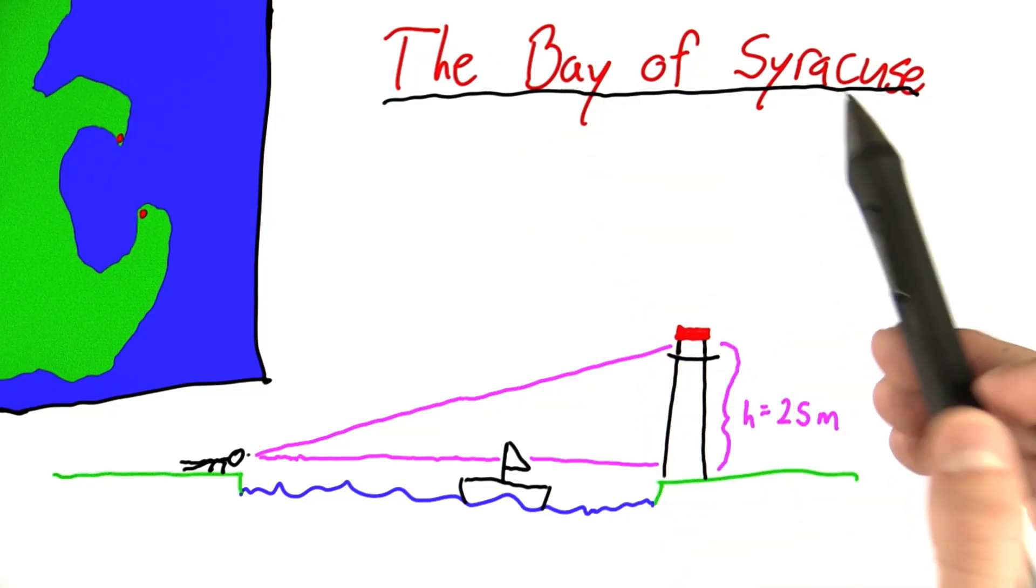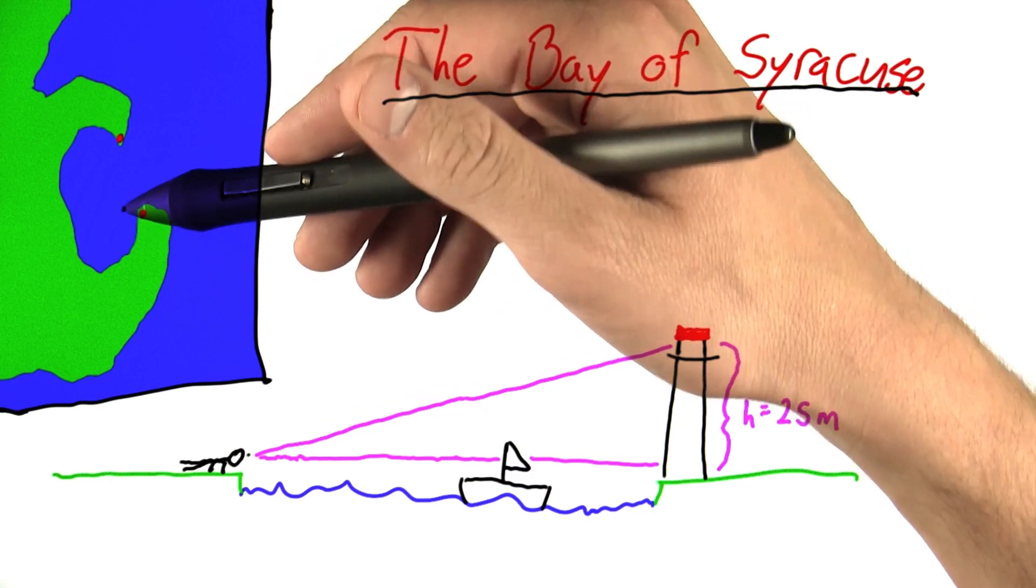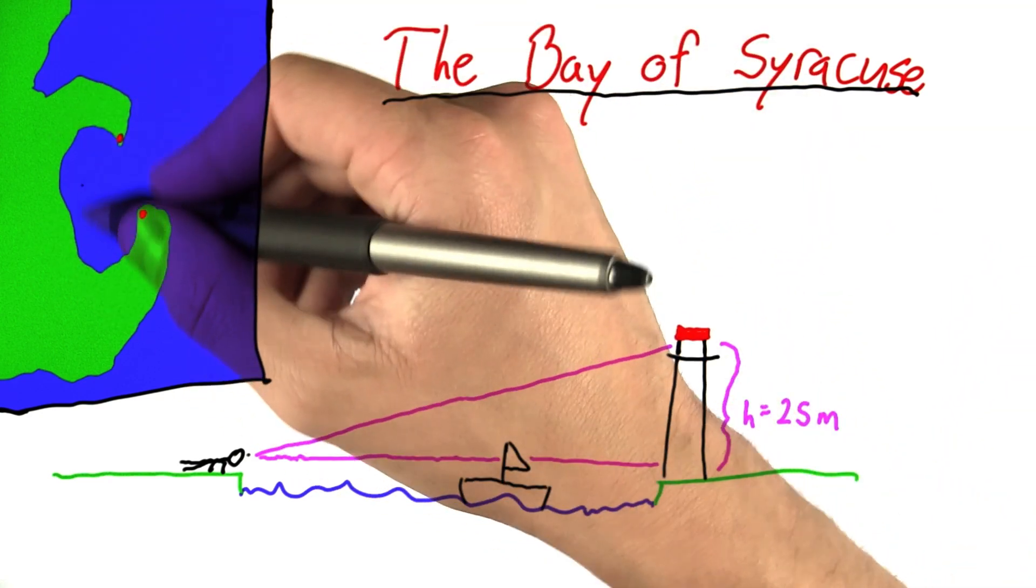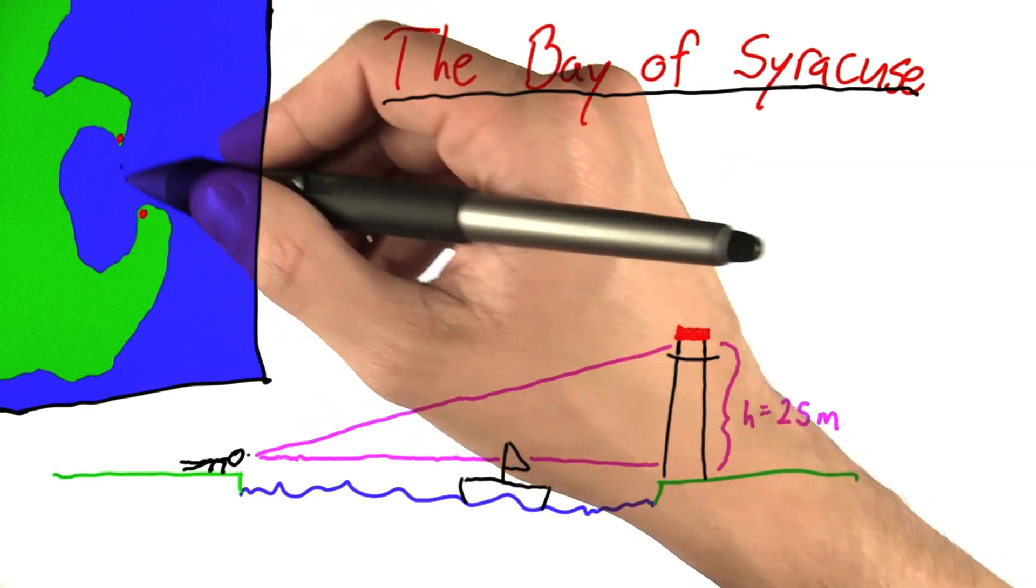This question involves the Bay of Syracuse. Now, Syracuse is on the water. It is on an island, after all. And it has a bay that looks somewhat like this, but please don't go to Google Maps to confirm because this is not a great drawing.